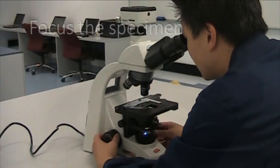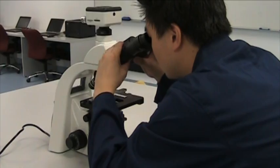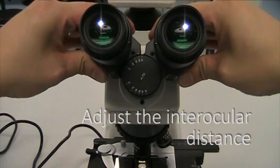Looking down the oculars, rotate the focus knobs until your specimen comes into sharp focus. It is important to use both eyes to look down the microscope. But because everybody's eyes are a different distance apart, you may need to adjust the interocular distance.